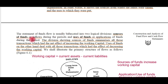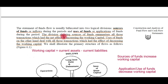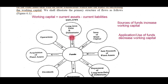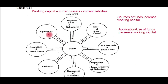The fund flow statement is usually bifurcated into two logical divisions: sources of funds, which are inflows, and uses of funds, which are applications. The division showing sources of funds summarizes all those transactions which had the net effect of increasing the working capital — inflows bring funds into the business. Uses of funds, on the other hand, deal with all those transactions which had the effect of decreasing the working capital.